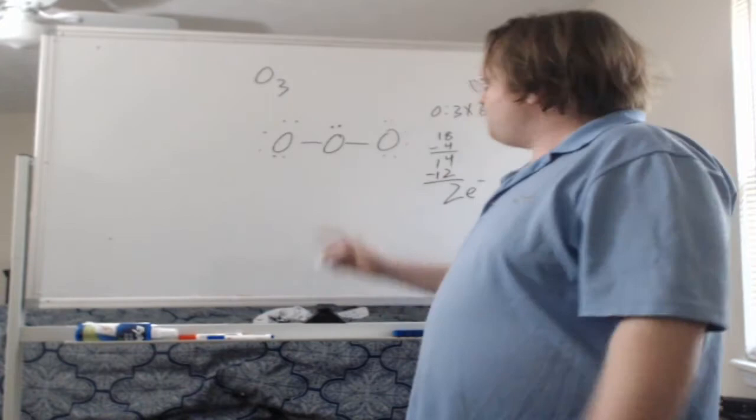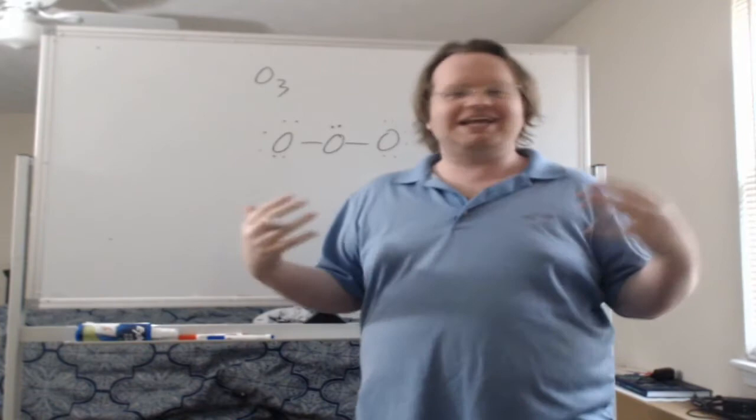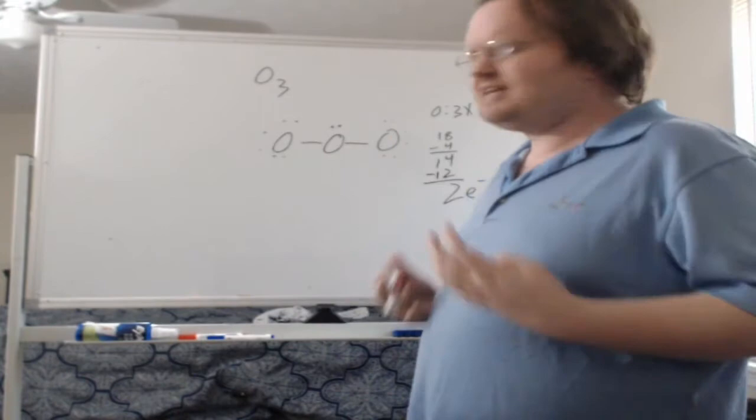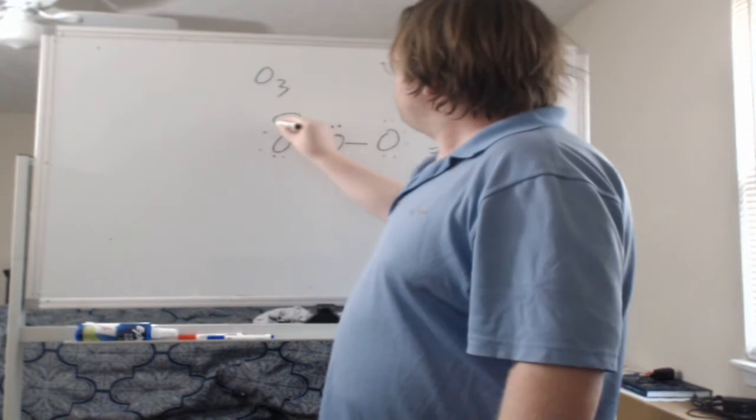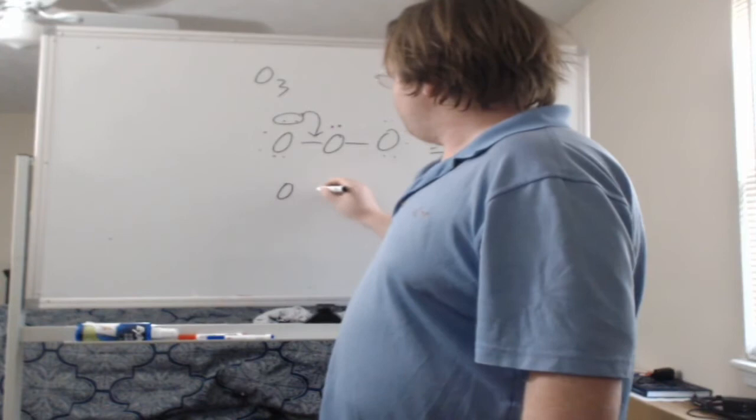Now we have to figure out a way to get the middle atom to have more electrons. So what we do is this oxygen asks one of his friends next to him for help. He goes, hey, look, I don't have enough electron density. Can somebody else lend me some of their electrons? So in this case, both oxygens are the same. So it's not going to make a difference where we take them from. So let's just say he goes to the left. He could also go to the right.